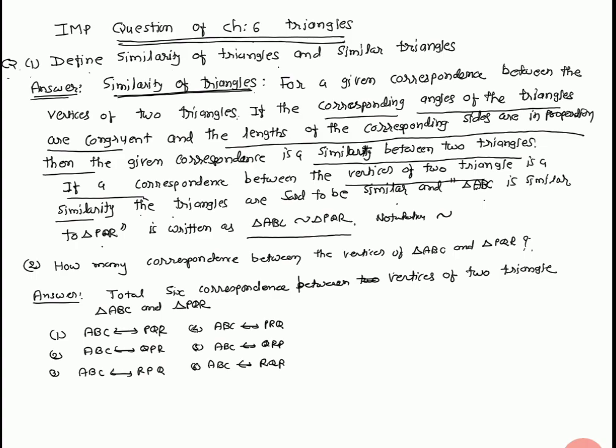We start the answer. Total 6 correspondences are possible between two vertices of triangle ABC and PQR. Number 1: ABC correspondence PQR.